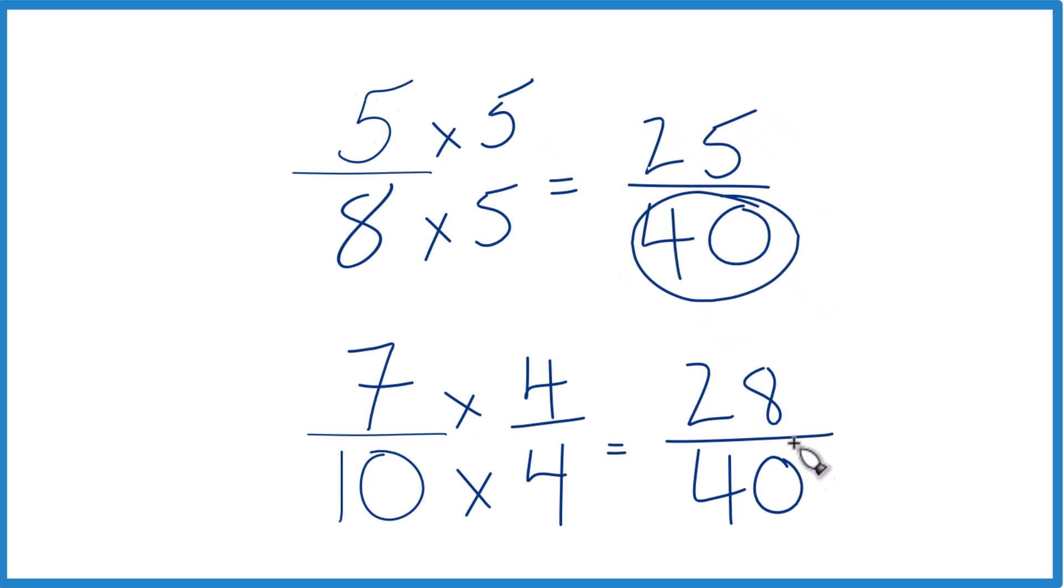And now since we have the same denominators, we can just compare these numerators, figure out what's bigger. 28 is larger than 25, so 28 fortieths, that's larger than 25 fortieths. Since these are equivalent here, and then these are equivalent here, 7 tenths, that's larger than 5 eighths.